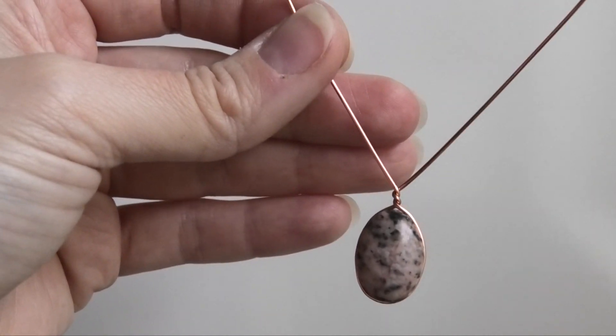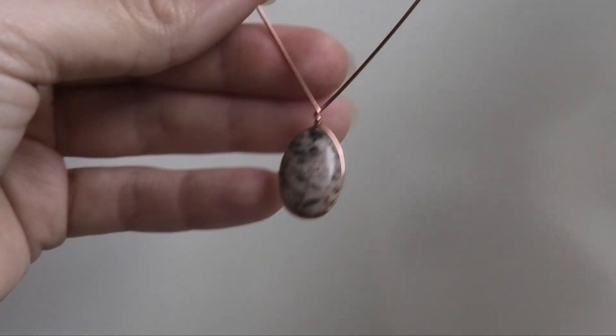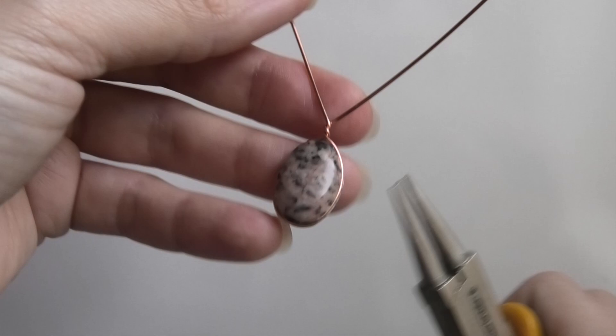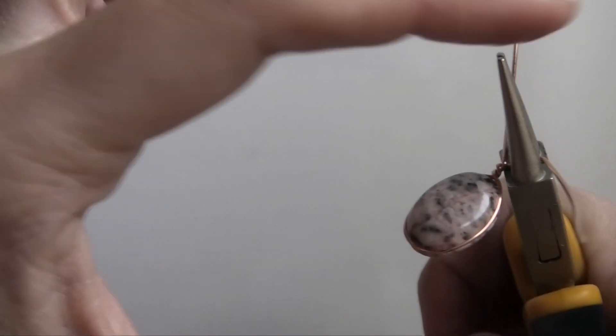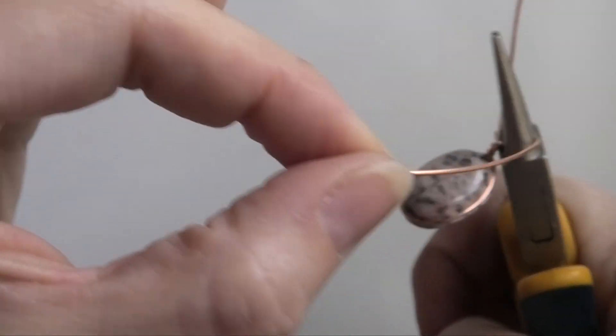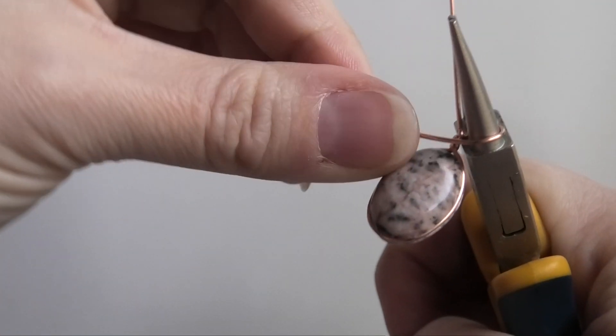So all that's left to do now is to make our bail. So you can either do this by hand, or you can use some round-nose pliers to help you get the shape. But you want to make a shape of a circle.